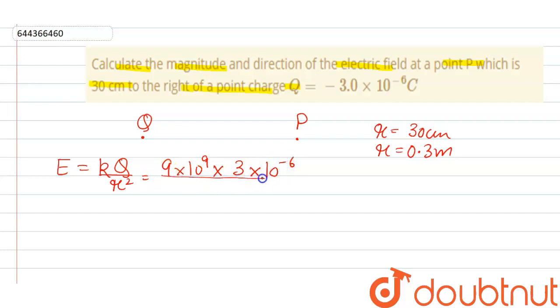So r² is 0.09. On solving, cancelling 9 with 9, we get the answer to be